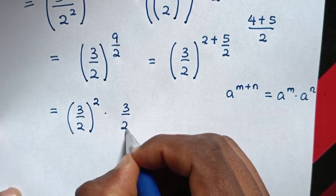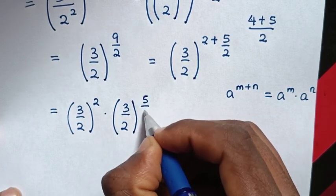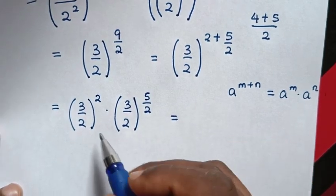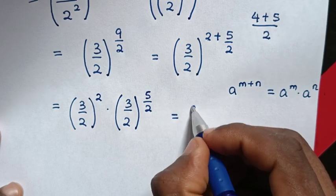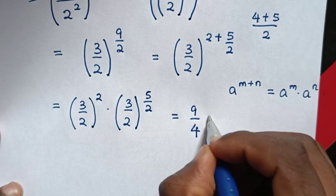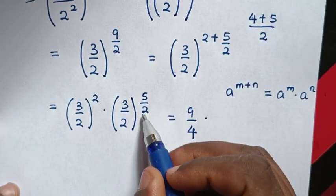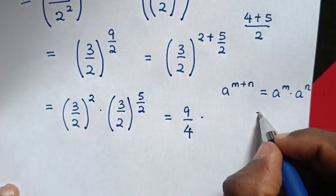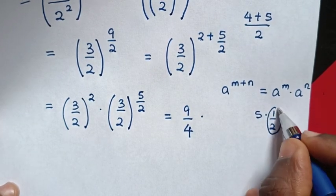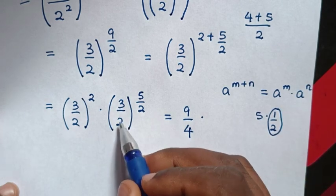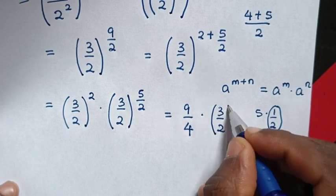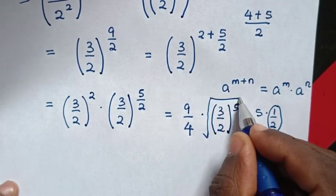So it will be 3 over 2, in bracket, power of 5 over 2. Then it will be equal to: 3 power of 2 is 9, over 2 power of 2 is 4, then times. In this power of 5 over 2, 5 over 2 is same as 5 times 1 over 2, whereas 1 over 2 means square root. So it will be (3 over 2), power of 5, then we apply square root.